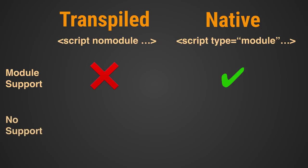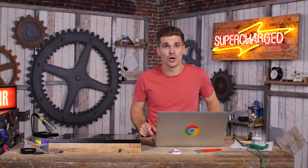Browsers without module support won't load the type equals module script tag, as they don't know what the type is. And these browsers also don't know what nomodule means, which means they will load this script instead. As you can see, every browser will only load one version. This allows you to deliver better performance to newer browsers without breaking older ones. Hooray for modules!